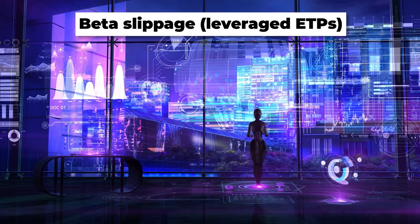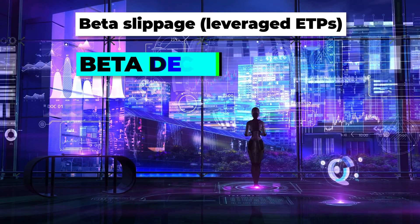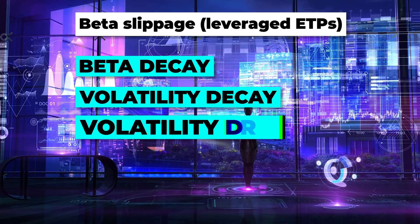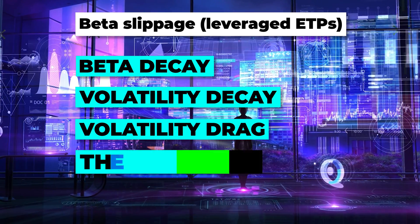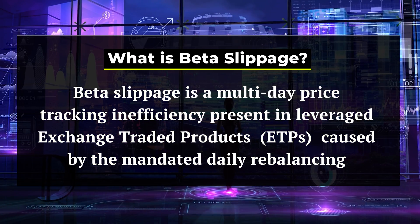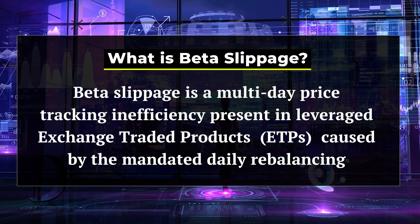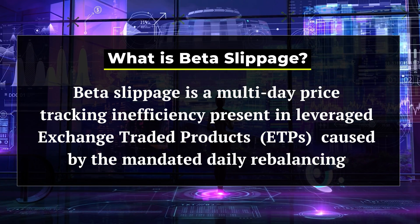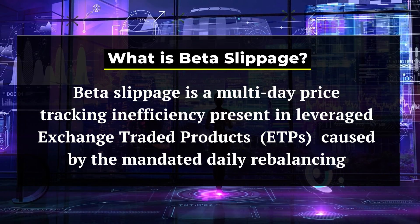So let's start with a very basic definition. Beta Slippage — which you may also hear as Beta Decay, Volatility Decay, Volatility Drag, or the Gearing Effect — these all mean the same thing. It's a multi-day price tracking inefficiency present in leveraged ETPs caused by the mandated daily rebalancing. We can actually just see the Beta Slippage when we go through some real examples.